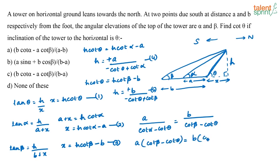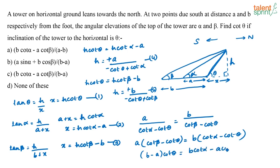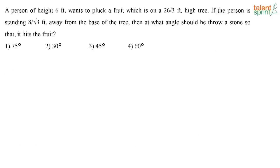Taking all cot theta terms together and moving other terms to the other side: (b − a)·cot theta = b·cot alpha − a·cot beta, so cot theta = (b·cot alpha − a·cot beta)/(b − a). The correct answer is option C: cot theta = (b·cot alpha − a·cot beta)/(b − a).